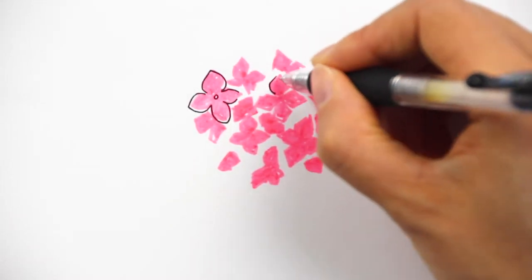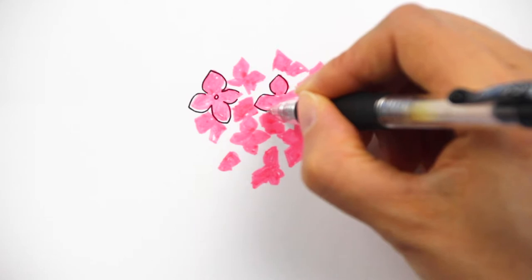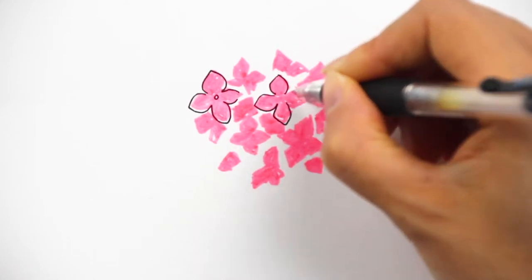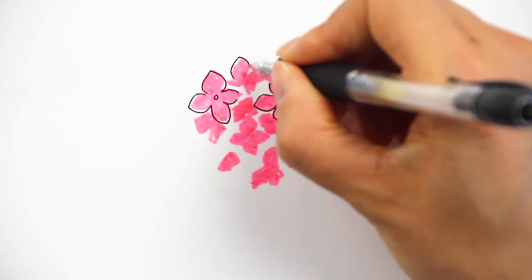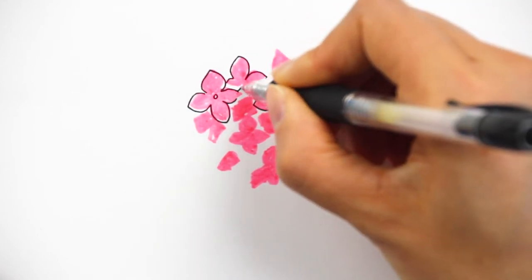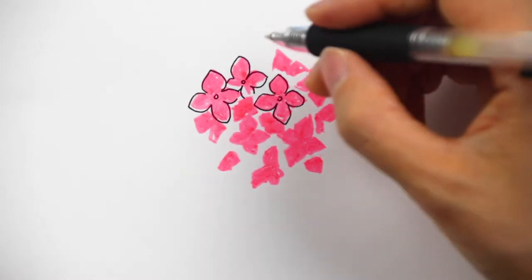Whenever I finish one, I can add the pistil in the middle. I'm doing these four-petal flowers first to show that they are not actually hidden behind any other petals.